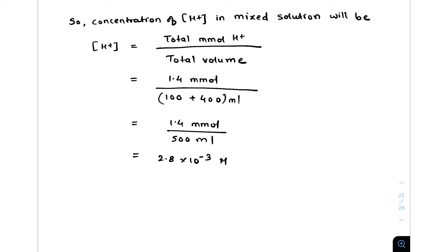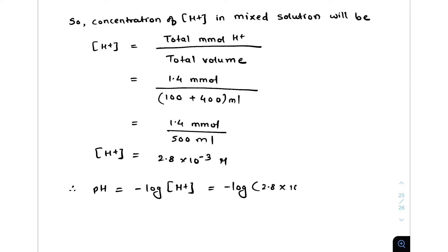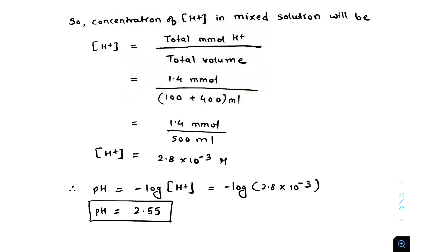Now we calculate the pH. pH equals negative log of [H⁺], which is negative log of 2.8 × 10⁻³. The pH of the resulting solution after mixing both solutions equals 2.55.